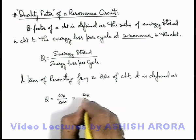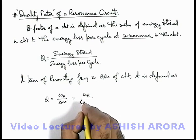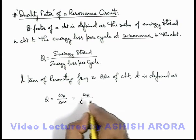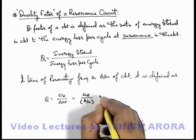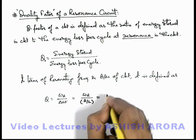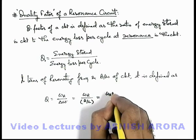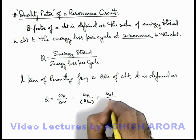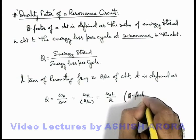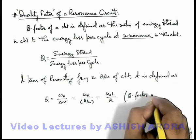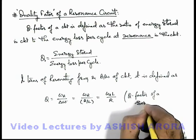Which we can directly write as resonating frequency divided by bandwidth. We have recently calculated for the series RLC circuit that bandwidth equals R divided by L. So the Q factor can be written as resonating frequency times L divided by R. This is the Q factor of a series RLC circuit.